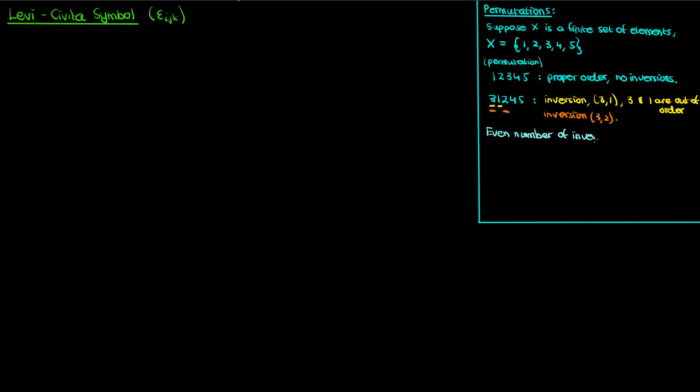And since there are an even number of inversions, the permutation is called an even permutation. Quick note though that 0 counts as an even number, so 0 inversions like with 1, 2, 3, 4, 5 is still an even permutation.